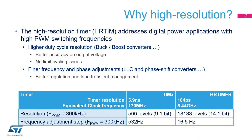The high-resolution timer essentially addresses digital power applications, such as switch mode power supplies that require high PWM switching frequencies. It allows the drastic improvement of the duty cycle resolution, typically for buck or boost converters. This results in a better output voltage resolution and regulation, and avoids limit cycling issues which can happen with a regular resolution timer when the duty cycle accuracy is lower than the ADC accuracy.